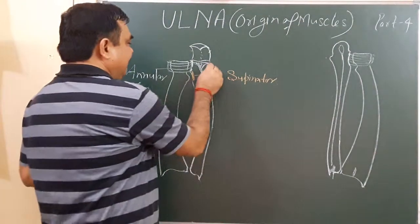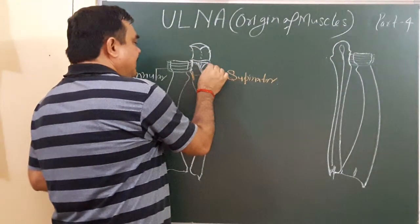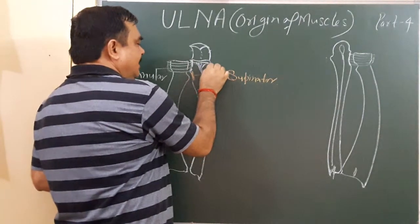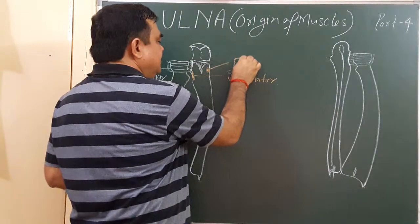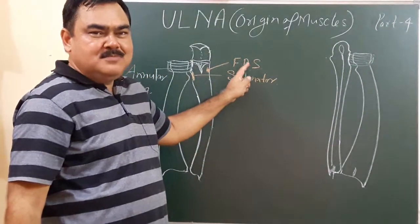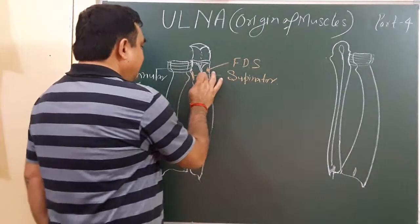Another muscle arises from the medial part of the coronoid process. From here, this is flexor digitorum superficialis.